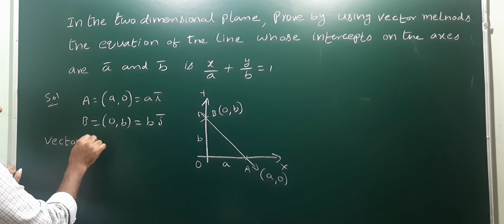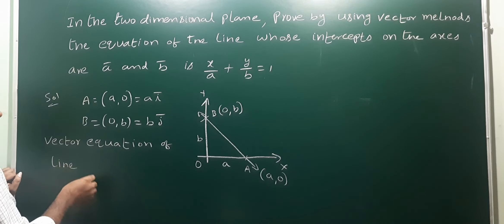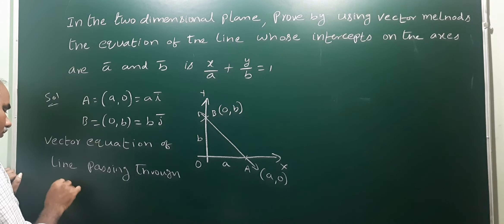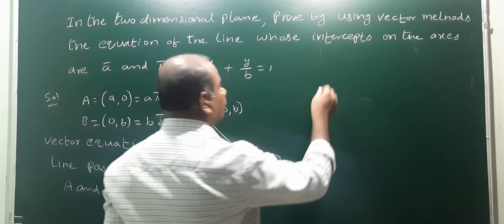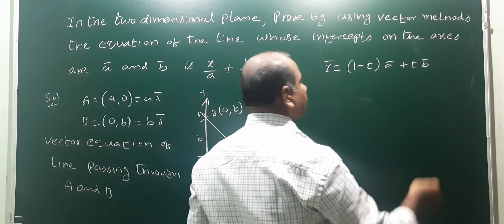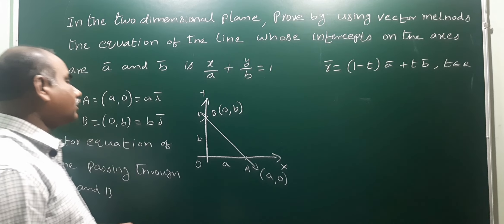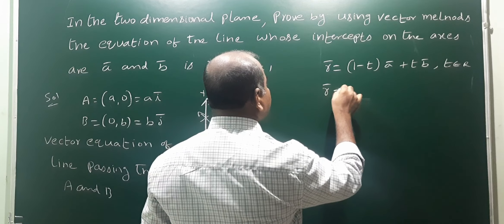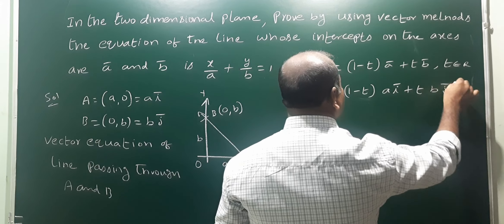Now we write the vector equation of the line passing through two points A and B. The two-point vector equation of a line formula is: r̄ = (1−t)·ā + t·b̄, where t is a real number. Substituting ā = aī and b̄ = bj̄, we get r̄ = (1−t)·aī + t·bj̄.